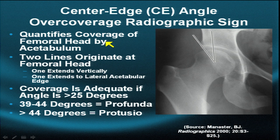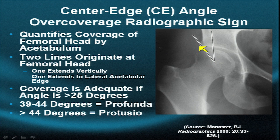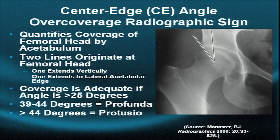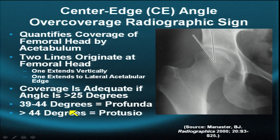The center edge angle quantifies the coverage or over-coverage of the femoral head by the acetabulum. There are two lines — both beginning at the center of the femoral head — one goes straight vertically, the other parallels the free bony edge of the acetabulum. Coverage is adequate if the angle is greater than 25 degrees. If the angle is greater than 39 to 44 degrees, we say there is coxa profunda; if greater than 44 degrees, there is protrusio acetabuli.